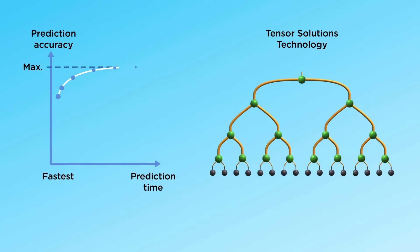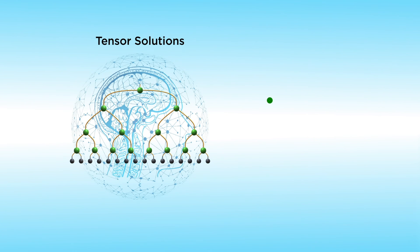With variable tuning for optimal precision or faster predictions, you choose the level of compromise. Thus, Tensor Solutions offers a flexible and transparent tool to solve your machine learning problems.